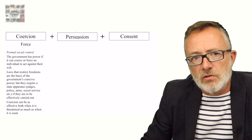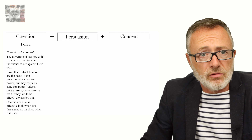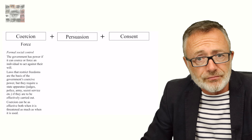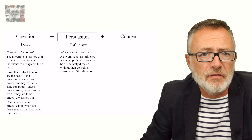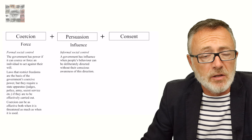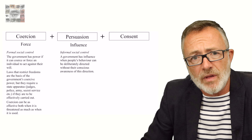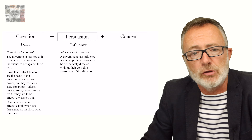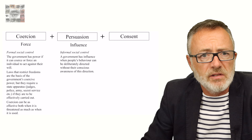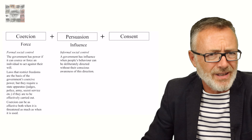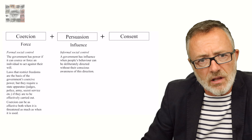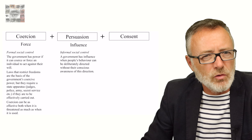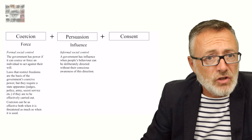The second means through which the state controls the individual citizen is through persuasion or influence. This is what sociologists call informal social control. A state and its government have effective influence when people and their behavior can be deliberately directed without their conscious awareness of this direction. This requires the state to have an ability to affect the way people think, to influence what citizens come to value, what citizens come to dislike, and to help define what is considered normal or natural — things that are unchanging.